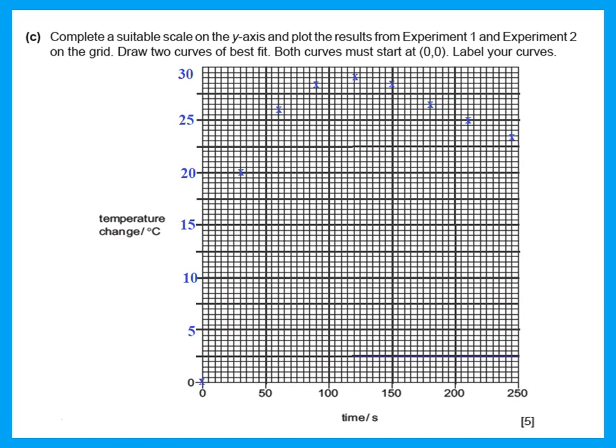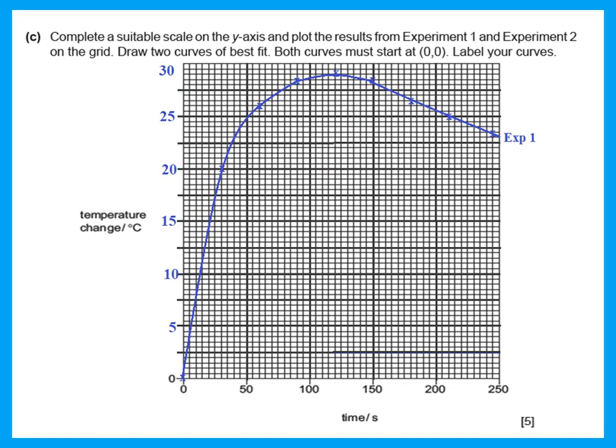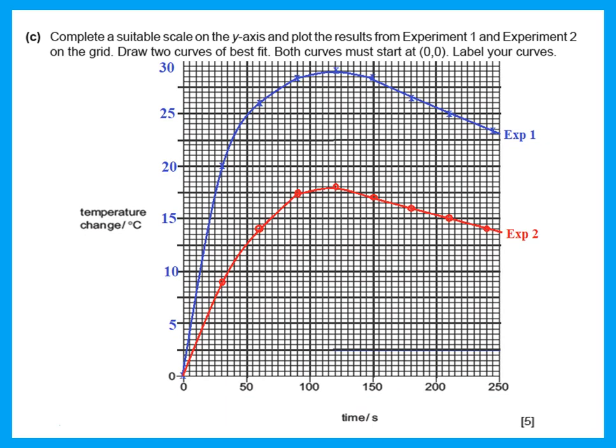He then says complete a suitable scale on the y-axis and plot the results from experiment one and experiment two. Remember to use as much of the graph paper as possible — a reasonable scale would have 5, 10, 15, 20. Plot the first curve, draw two curves, plot the points with small X's and join them before moving to the next experiment. Remember to label your curve for experiment one, and use dots with a circle for experiment two.